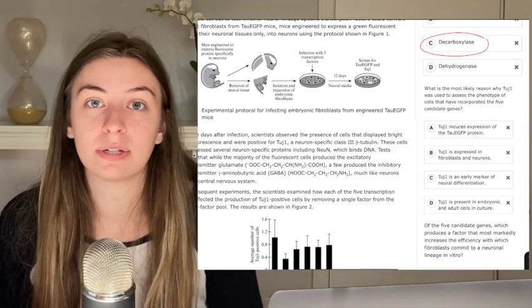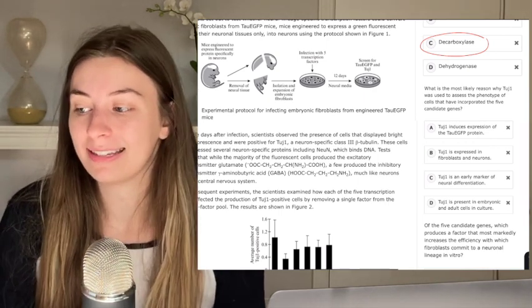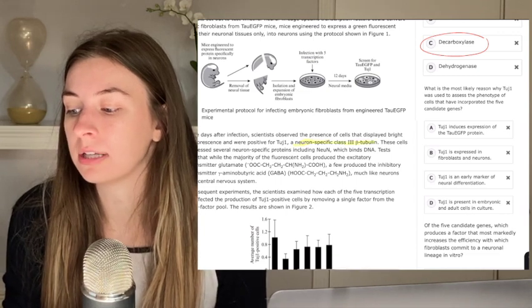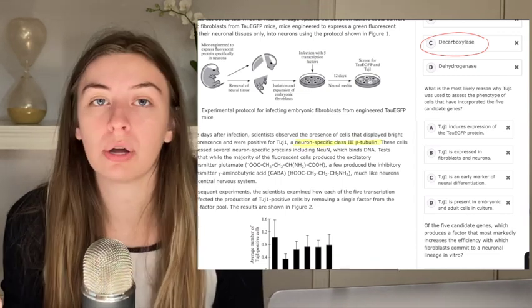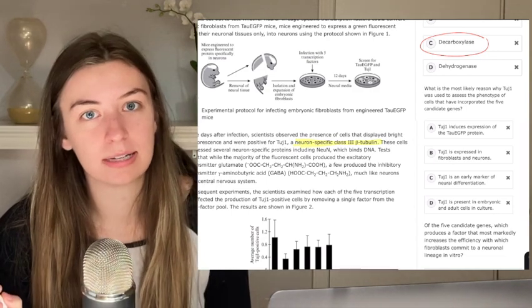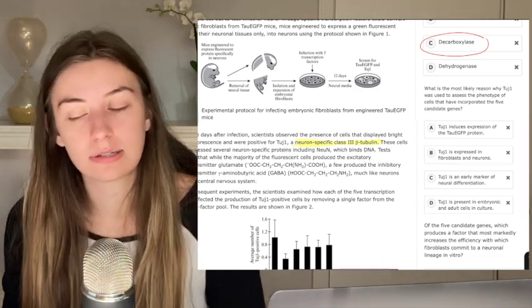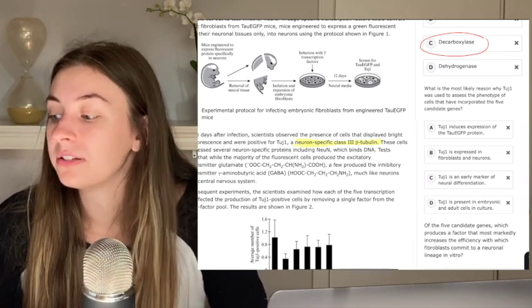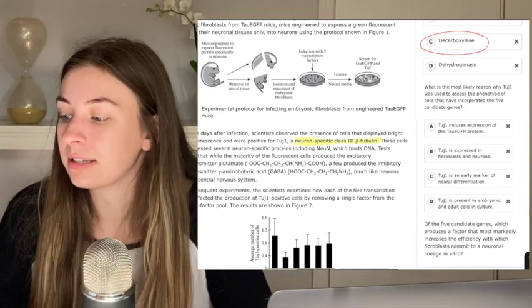Before I even look at the answer choices, I know from the passage that TUJ1 was a neuron specific class 3 beta tubulin. I don't know what the heck that means, but I do know what neuron specific means. It means it was only in neurons. So what's TUJ1 got to do with neurons? Let's, let's go.